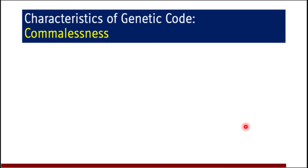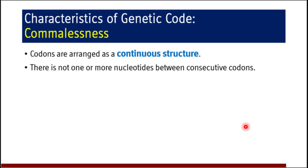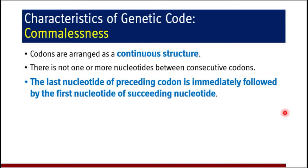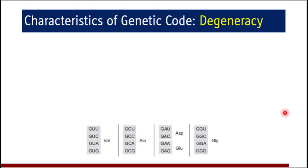The next property is comma-lessness, or the absence of punctuation. The codons are arranged in a continuous structure — there is no comma and no overlapping. There is no common nucleotide between two codons, and the last nucleotide of a preceding codon is immediately followed by the first nucleotide of the succeeding codon.